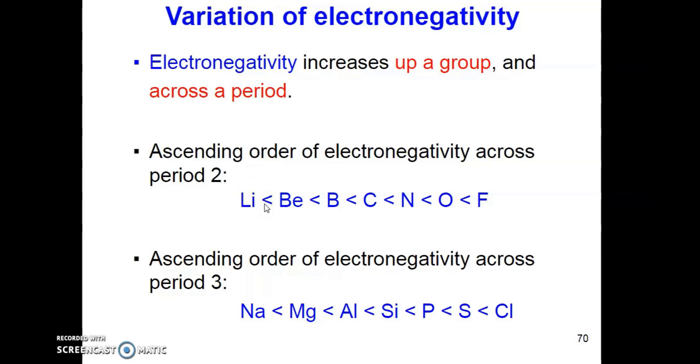the order of electronegativity is in ascending order. Lithium in group 1 has the lowest electronegativity and the electronegativity will increase from lithium to beryllium, boron, carbon, nitrogen, oxygen and fluorine in group 17. The same trend is observed for elements in period 3.